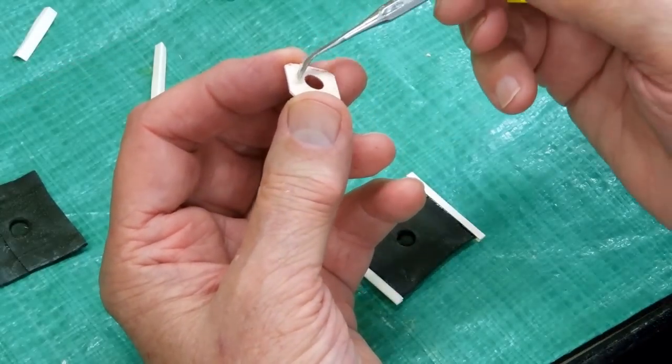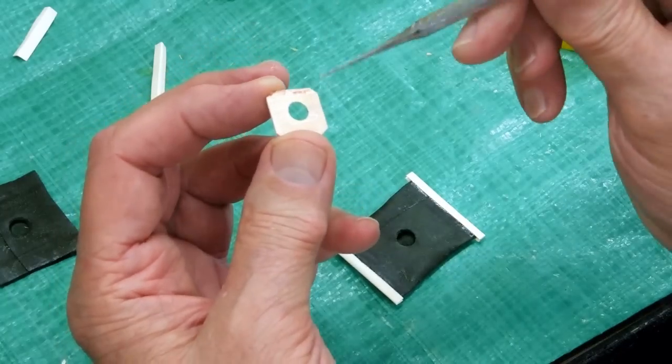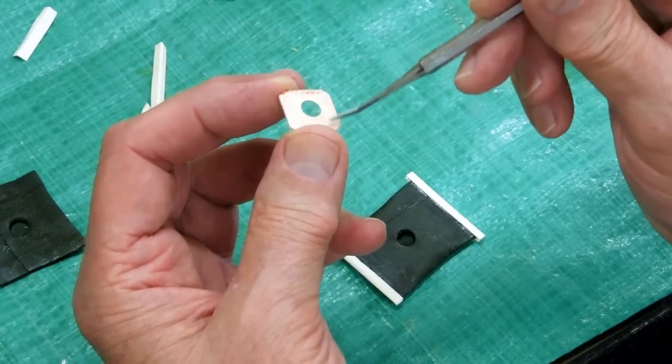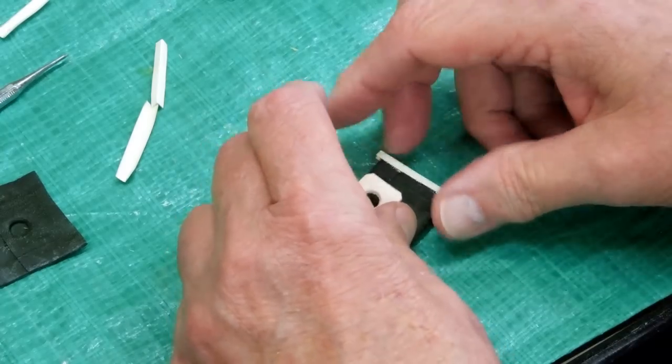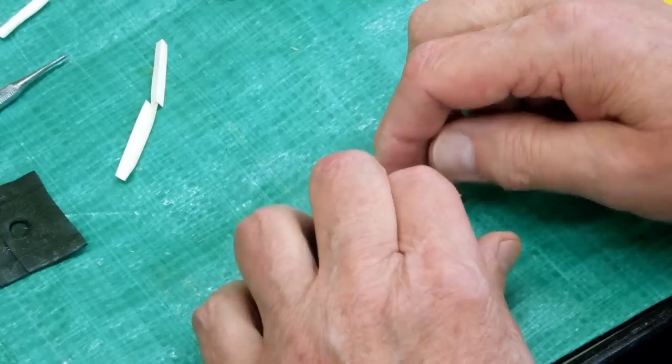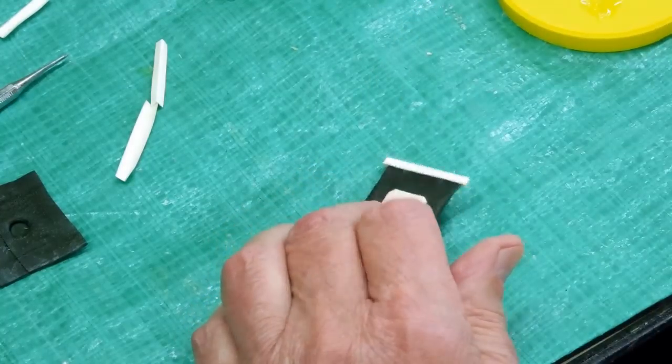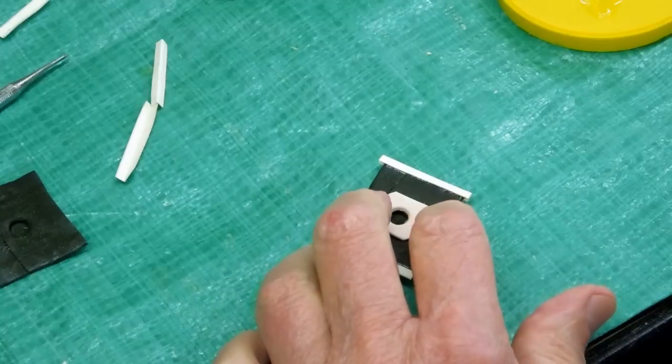Put some fish glue on the back side of this. I'm using fish glue because it seems to stick to everything, including me. I'm going to put that dead center over that hole. We don't want so much glue on there that it's going to squeeze out because we don't want it to go down inside that hole.